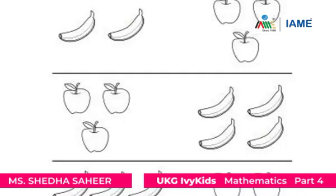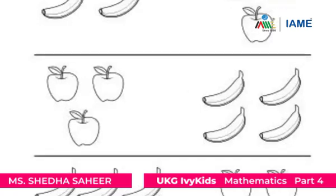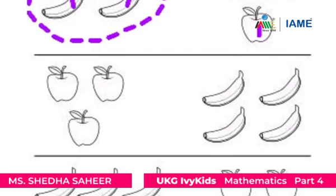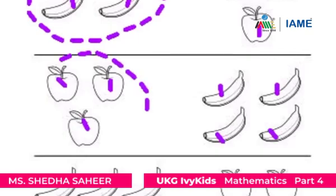Let's find out the less in number of fruits in each group. Let's count the apples and bananas in the first group: apples — one, two; bananas — one, two, three. So bananas are less and we will circle the bananas. Now let's count the apples and bananas in the second group: apples — one, two, three; bananas — one, two, three, four. So apples are less and we circle the apples.